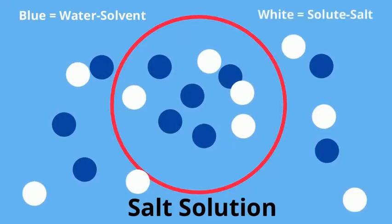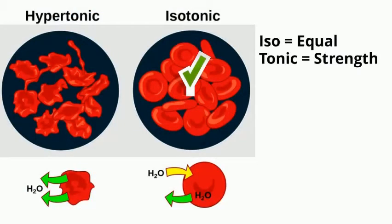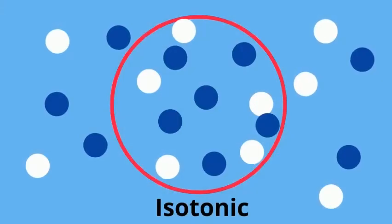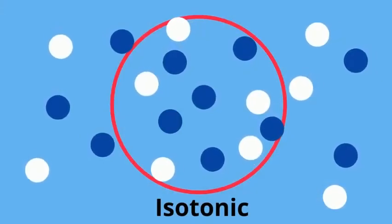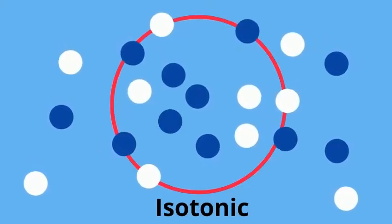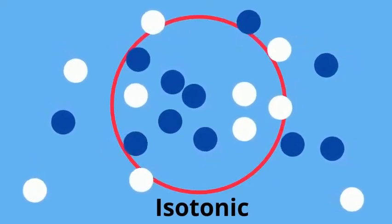An isotonic solution is equal, iso meaning equal and tonic meaning strength. So the solute and the solvent will travel in and out of the cell equally, and the cell will stay the same.